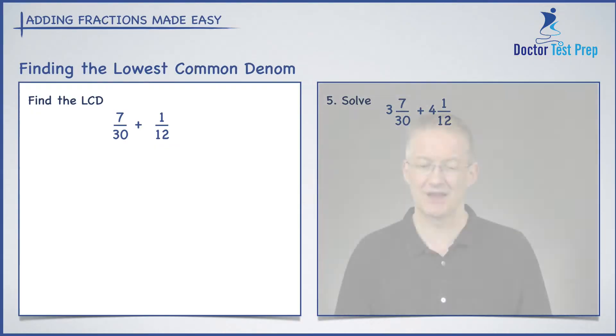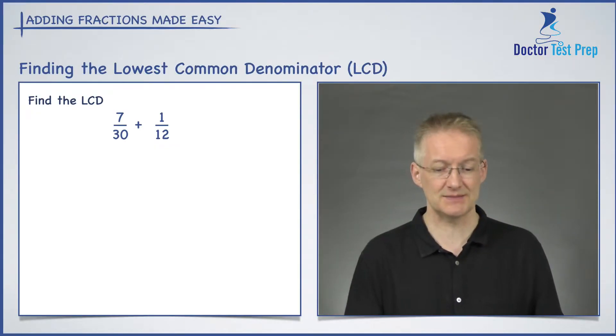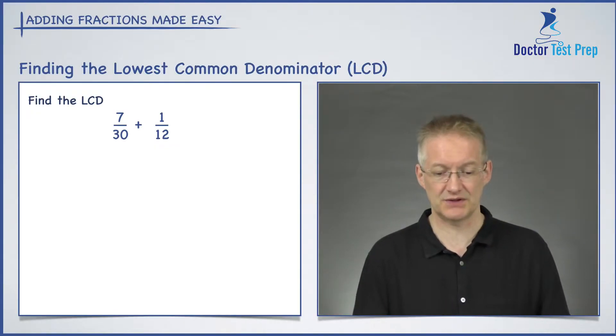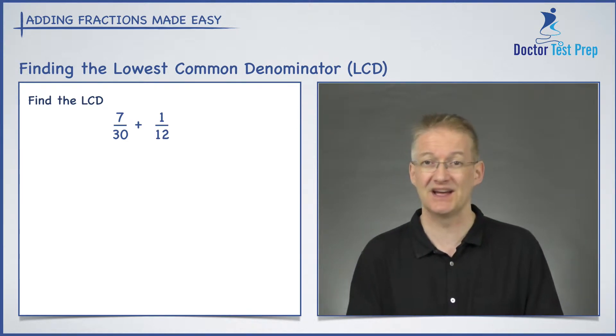Just to recap: to find our lowest common denominator, one method is to write down multiples of each denominator until we see the same common number — and that's our lowest common denominator. Now, in this next method, I'm going to show you another way of finding the lowest common denominator.